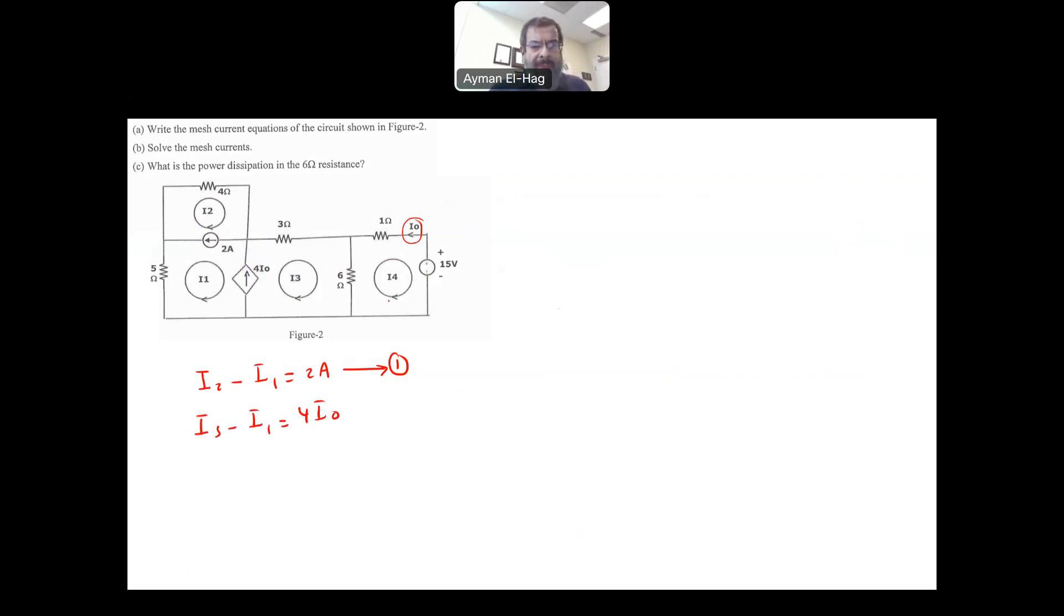Now I'm adding another unknown, which means I'm increasing the size of the problem. I don't like that, so I want to get rid of I0. But what is basically I0? I0 can be found from mesh number 4. I4 is going in this direction opposing I0, so basically I4 and I0 are equal to each other but opposite signs. So I4 is equal to minus I0. Substitute this one here: I3 minus I1 is equal to minus 4I4. I can rearrange the equations: I1 minus I3 minus 4I4 equal to zero. This is my second equation.